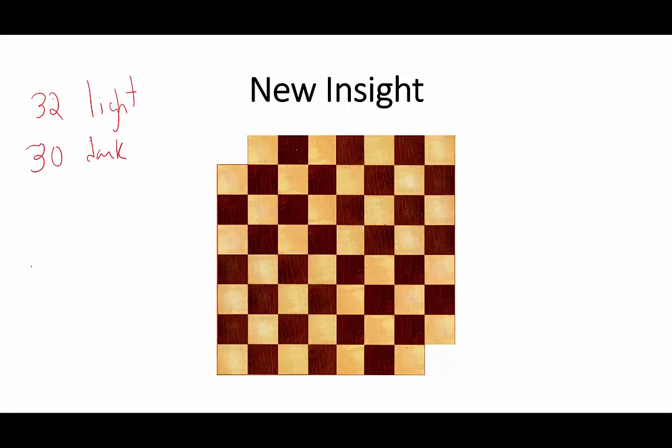So with 31 dominoes, each of which must cover a dark and a light square, with 31 we want to cover 32 light squares, which is impossible.